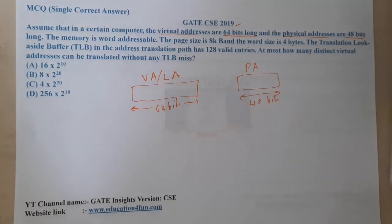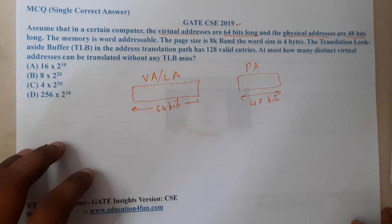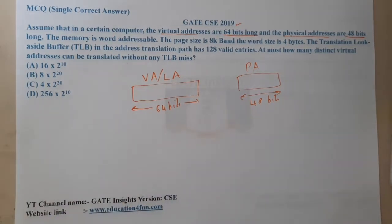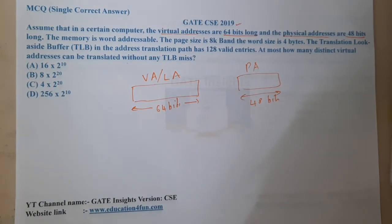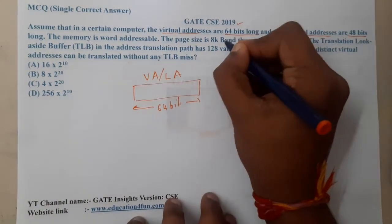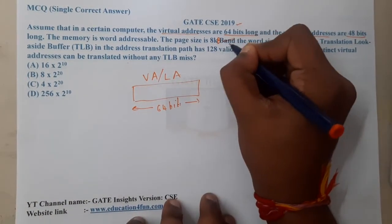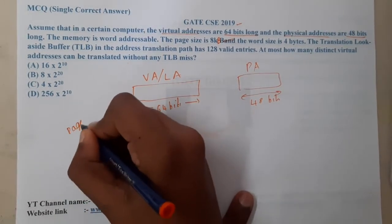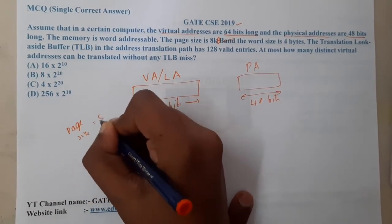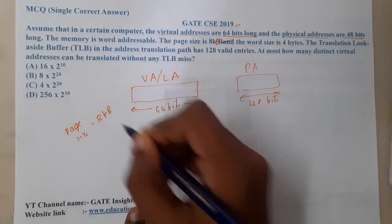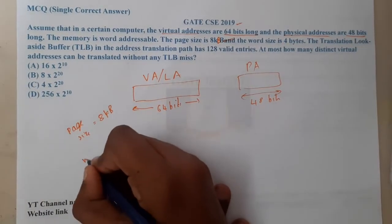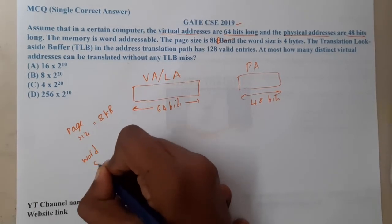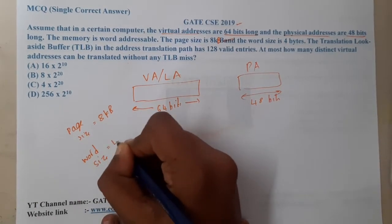The page size is 8 KB, and each word size is 4 bytes. So we have page size = 8 KB and word size = 4 bytes.